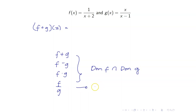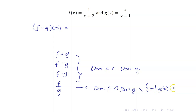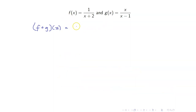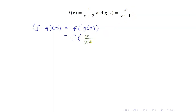For f over g, you still get the intersection of the two domains but take away values which would make the denominator equal to 0. However, for f circle g, you really have to compute what f circle g is. Let us compute f circle g of x. This is f of g of x. I will replace g of x by x over x minus 1.